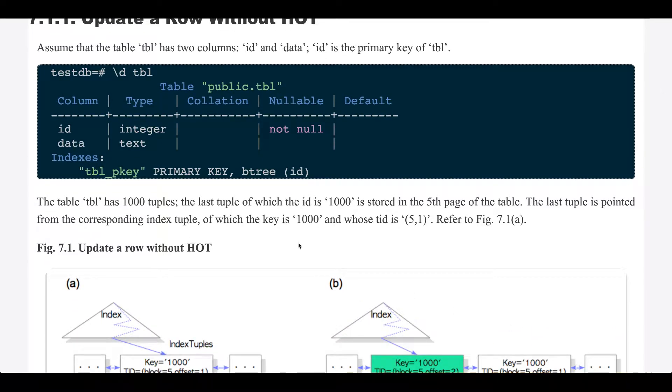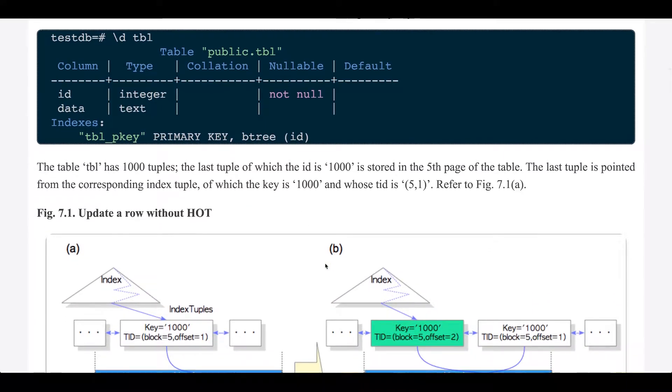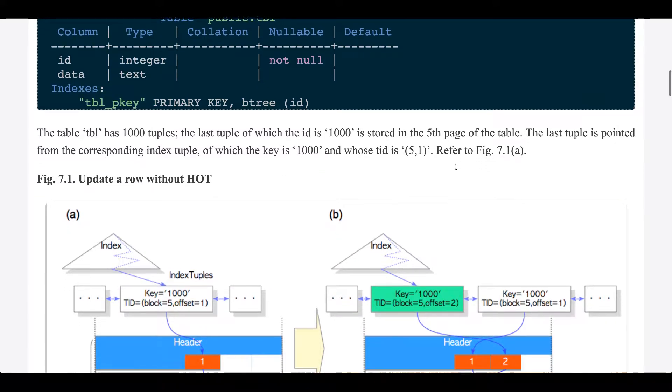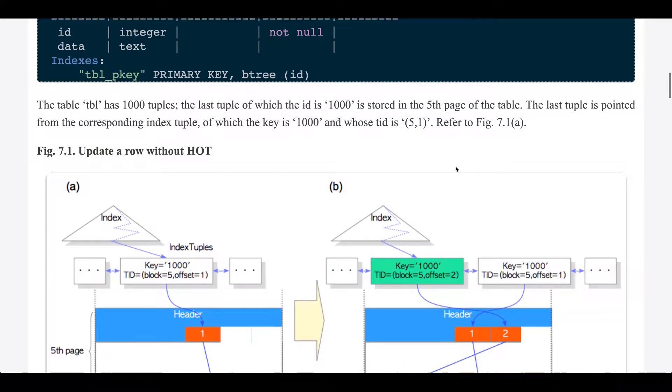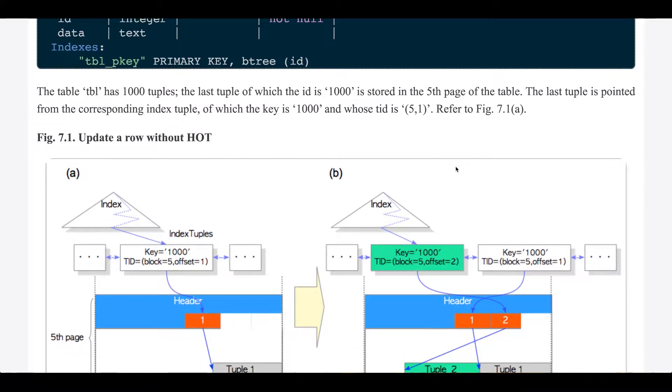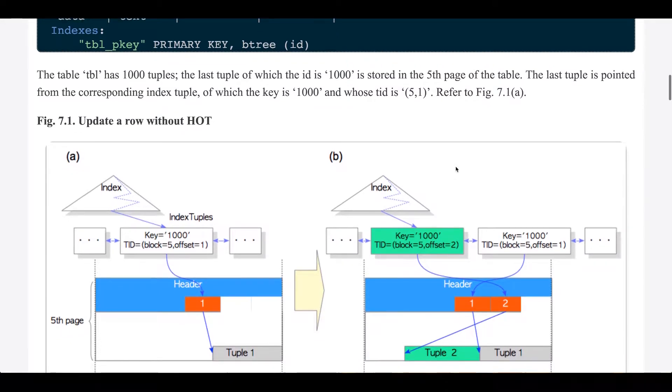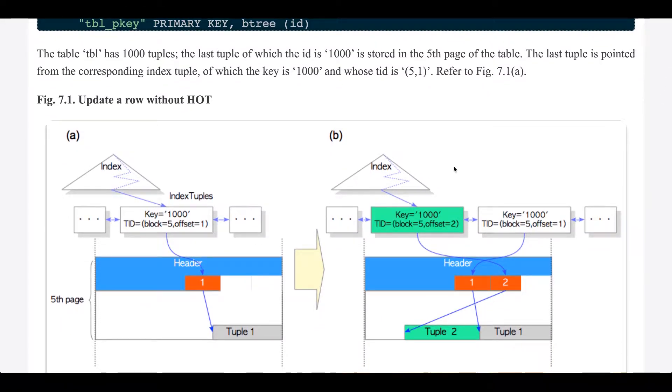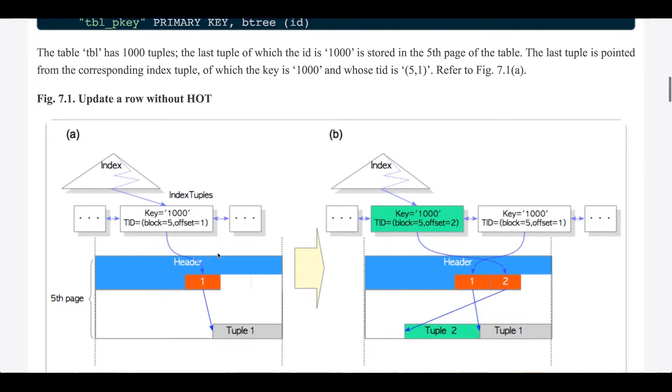The table has 1000 tuples. The last tuple of which the id is 1000 is stored in the fifth page of the table. The last tuple is pointed from the corresponding index tuple, of which the key is 1000, and whose tid is 5,1. Refer to figure 7.1a.